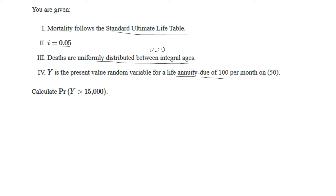So Y we set as annuity due of $100. We're gonna have 100 times the annuity due and because this is discrete we're gonna have K plus one, and we want this to be greater than 15,000.